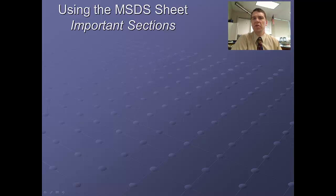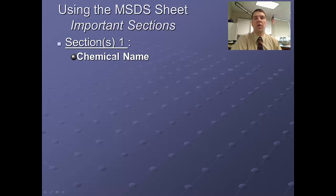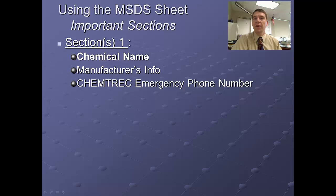We're going to highlight just some of the important sections for our work in the chemistry lab. In the first section, you'll have prominently displayed the name of the chemical, the name of the material, followed by contact information about the company that furnished it — their contact information and phone number.